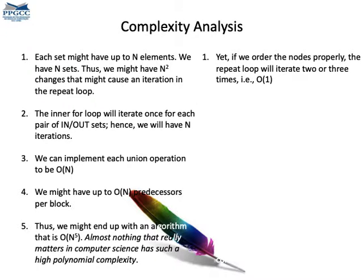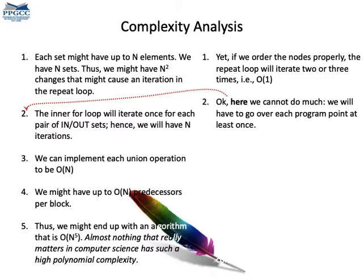Indeed, if we order the nodes properly, we will never iterate more than twice, or at most three times on the program. Things stop changing real fast. In the next class, we will talk a bit about ordering. Concerning this round-robin traversal of the instructions, there is not much that we can do. Well, there is, but for now, let's leave it as linear.